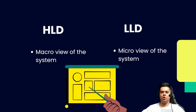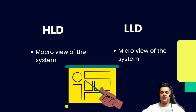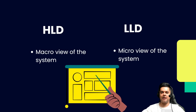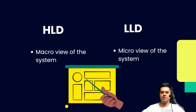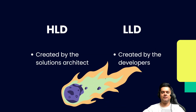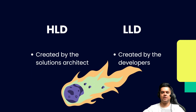HLD describes the overall architecture of the application as a whole, whereas LLD is a detailed design and description of every module associated with the application or system. High level designs are usually created by the solutions architect, and low level designs are created by the developers who will actually write the code.